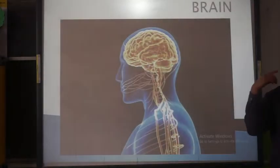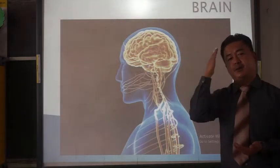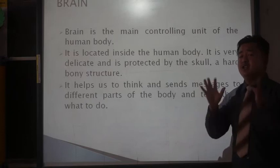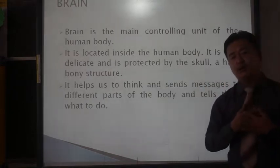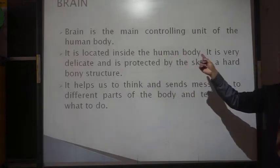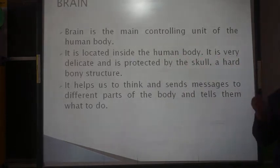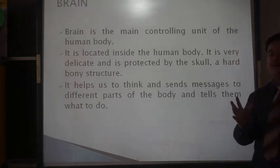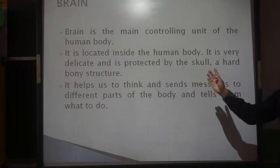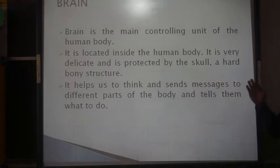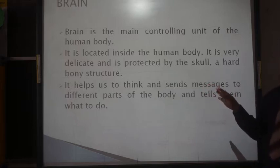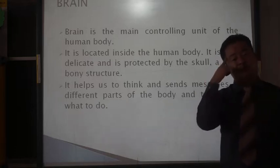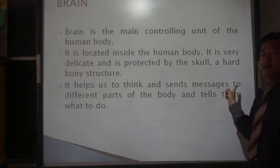The next organ we discuss is the human brain. The brain is the main controlling unit of the human body. It is very delicate and it is protected by the skull, which is a hard body structure. The main function of the brain is to help us think and send messages to different parts of the body, telling them what to do.